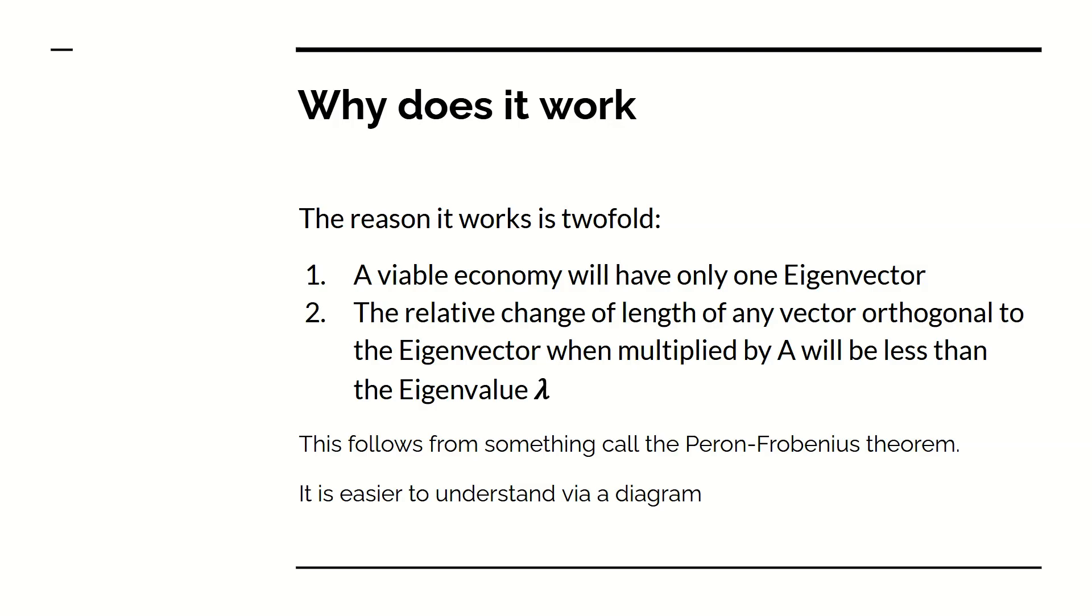The question is, why does it work? The reasons for this are twofold. One is that a viable economy will only have one eigenvector. This is due to an obscure theorem called the Perron-Frobenius theorem, which is about the properties of matrices which all of whose elements are positive or zero, no negative elements.